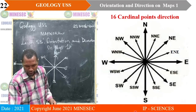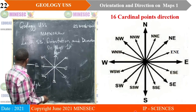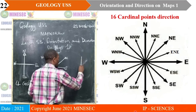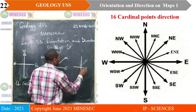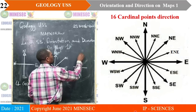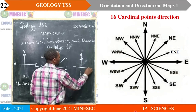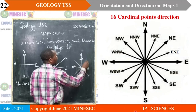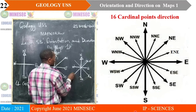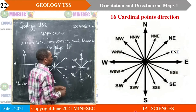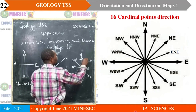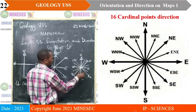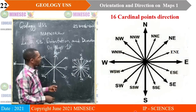To move to the 16 cardinal, we draw our 4 cardinal, then the 8 cardinal, and subdivide it by 2 to give us the 16 cardinal. Always remember the direction of the north, south, east, and west. Then we have northeast, southeast, southwest, and northwest. From the 8th cardinal, we now subdivide further to get the 16th cardinal.